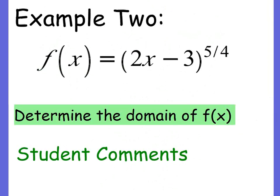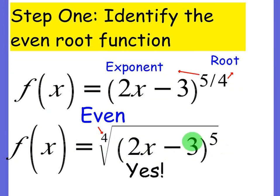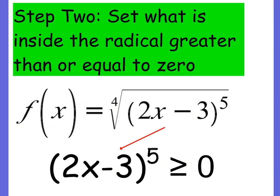Example 2: f of x equals (2x minus 3) to the 5/4 power. Determine the domain of f of x. Notice the denominator is even, so when we convert it to radical form it is indeed an even root function — the root is 4. Since it's even root, we take what's inside the radical and set it greater than or equal to 0. If it were an odd root, the domain would be all real numbers.